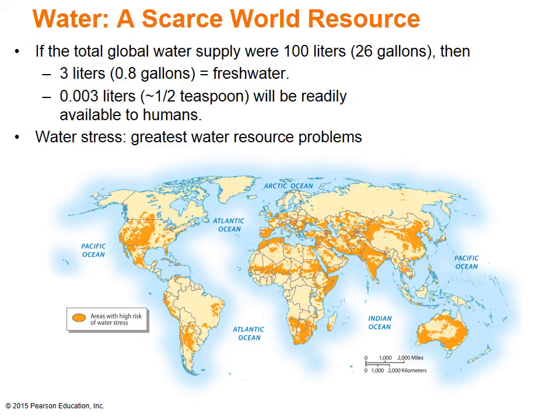The Earth's surface is about 70% water, yet water is the scarcest resource in the world and the most vital to human survival. Of all the water on our planet, 97% is unusable to humans because it is saltwater. Of the 3% that is freshwater, 70% is basically unreachable as it is frozen in the polar ice caps and glacial mountains. In addition, groundwater — which equals almost the remaining amount of freshwater — is often difficult to access. That leaves less than 1% of the world's water in more accessible surface rivers and lakes. In other words, if the total supply of global water were 26 gallons, only about 0.8 gallons would be freshwater and only approximately a half a teaspoon is readily available to humans, making water stress high on the resource problem list.